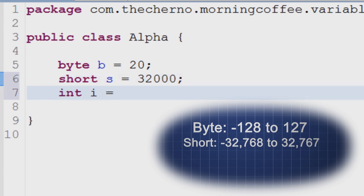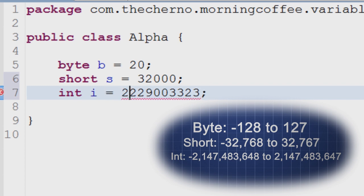After short we have int, short for integer. It stores integers anywhere from negative 2.1 billion roughly to positive 2.1 billion and is by far the most popular choice of variable for storing integers.